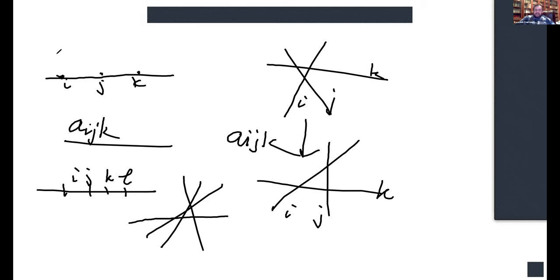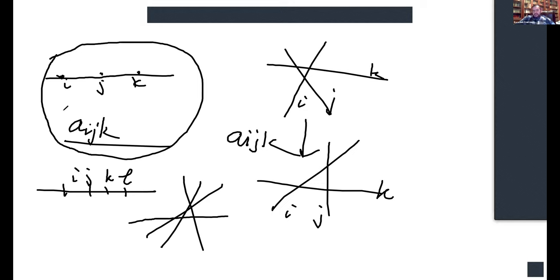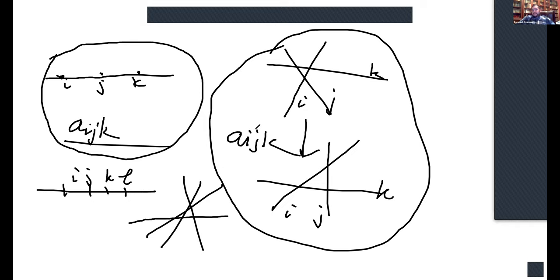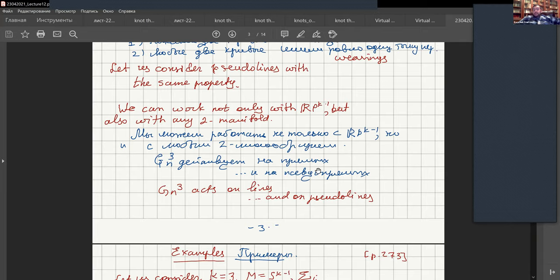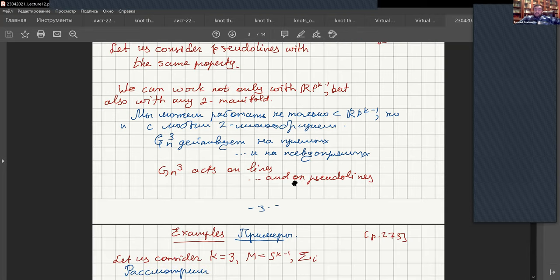These pictures — that we denote passing through a triple point as a_{ijk}, the case when i, j, k are collinear has a dual picture when three lines pass through one point — and when three lines pass through one point, we can consider the situation when four lines are close to passing through one point, giving a relation of length 8. So GN3 acts on lines and on pseudolines and curves.